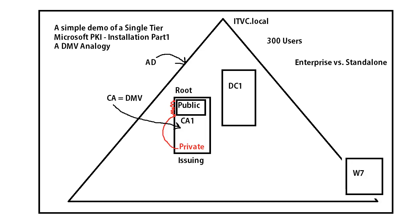If you go to your local DMV, you walk in the door, you can see their certificate on the wall — their plaque or some kind of state-based document that proves they are who they say they are. It makes you feel nice and warm and fuzzy inside, that you're actually at the right place as opposed to Uncle Harry's garage where he issues fake IDs. The Microsoft PKI kind of does the same type of thing.